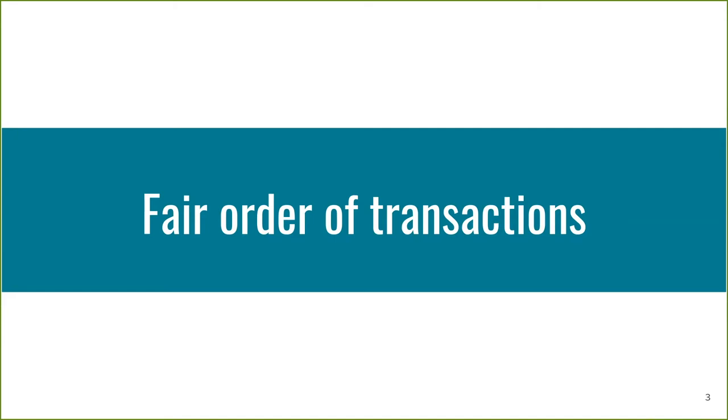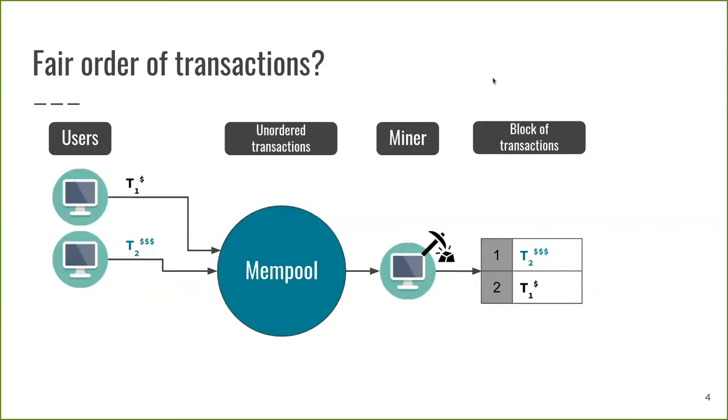First we discuss some background and problems of a fair order of transactions. In both permissionless and permissioned blockchains, miners or leaders have the power to select and order messages that go into the ledger. Consequently, malicious miners or Byzantine leaders may select and order transactions in such a way that they can extract value from the network. Furthermore, since transactions are public, also selfish users can exploit knowledge from the network to place their own transactions in a fraudulent way.